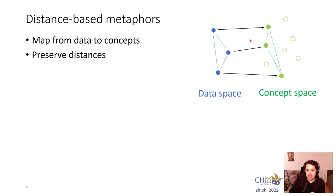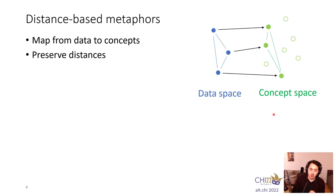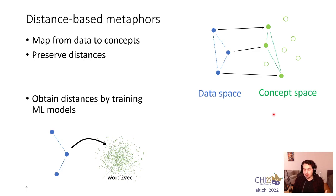We call this distance-based metaphors. Given some data points and a distance function between them, and concept points like images or words also with a distance or similarity function, we can map from data to concepts — each point gets mapped such that pairwise distances are preserved. Faraway points stay far away from each other and vice versa. Where would we get similarity functions for words and cats? It's 2022, so we use embeddings. For words, we can use Word2Vec, which is pretty well known, and just map our data to this word embedding using its similarity function.